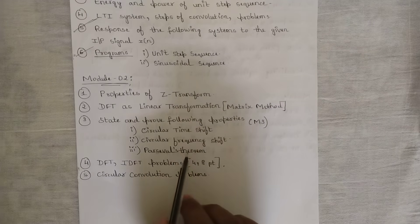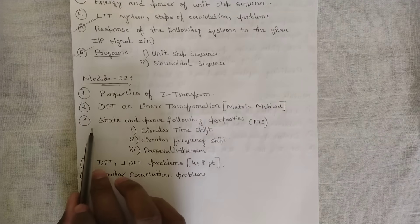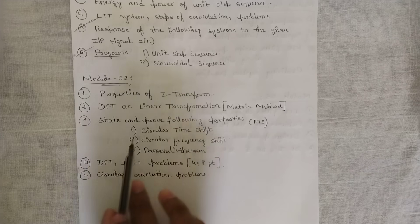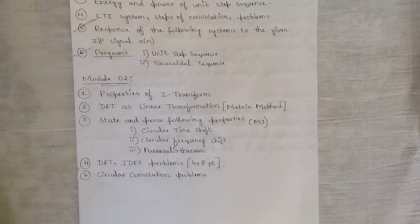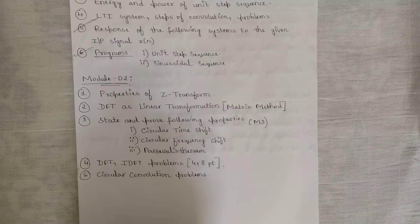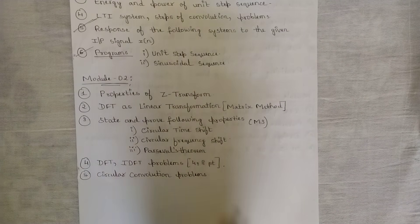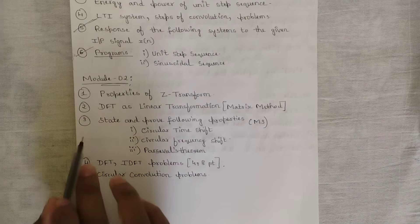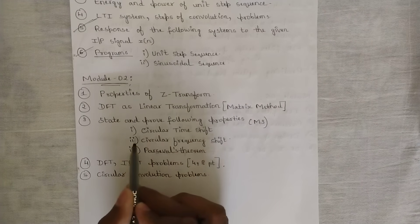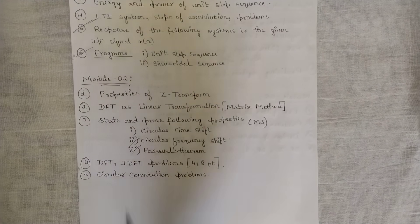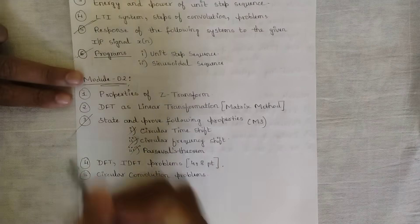Next — and I'm not sure whether this is module two or three, please let me know in the comments — is to state and prove the following properties: circular time shift, frequency shift, and Parseval's theorem. This is a very important question with high chances of being asked in tomorrow's paper. Any one of these properties, including the statement along with the proof, is likely to come. I have covered all three in my model paper solutions, so focus on them very well.